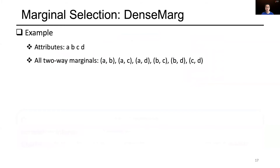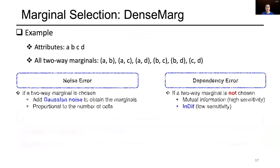For marginal selection, we propose a new method called DenseMark. It first considers all two-way marginals. For instance, in this example, we have four attributes and there are in total six two-way marginals. We need to determine which marginals to choose. In this process, we need to consider two sources of errors. First, when a two-way marginal is chosen, we need to consider the noise error since we need to add Gaussian noise to the marginal table to guarantee DP. The noise error is proportional to the number of cells in the marginal table. On the other hand, when a two-way marginal is not chosen, we need to consider dependency error since we cannot capture the correlation information of that marginal table.